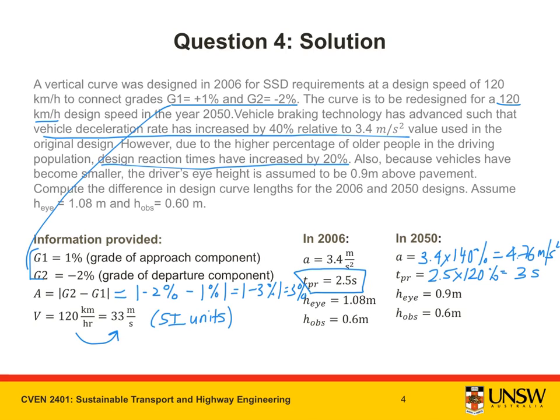Now in terms of H_I and H_obs, we've been given values that we've been asked to safely assume. But we've also been told that because vehicles have become smaller from 2006 to 2050, the driver's eye height is assumed to be 0.9 meters above the pavement. Therefore, in 2006, I can assume H_I and H_obs are these values. But in 2050, I have to assume that H_I is equal to 0.9 meters. And then we're also not told that H_obs changes. Therefore, I've kept it at 0.6 meters. So now we've extracted all of the information from the question out into the various parameters.